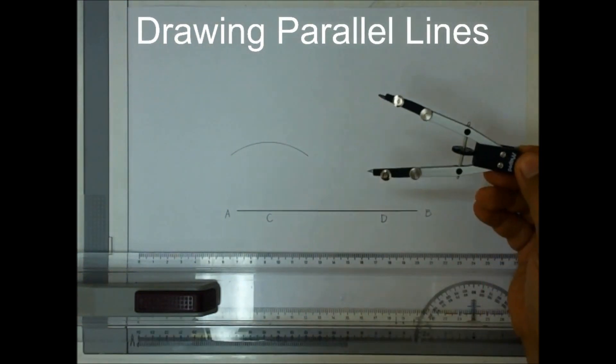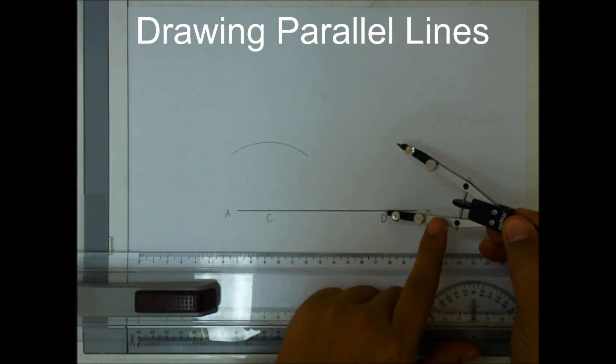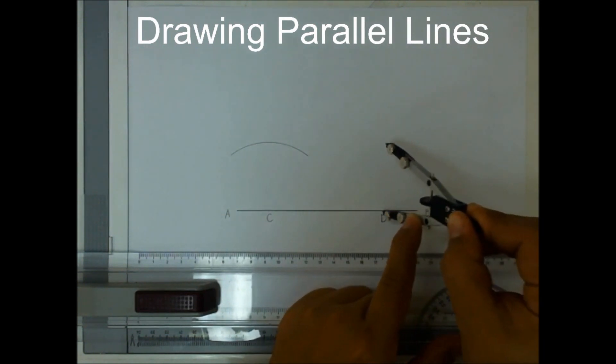Without changing the settings of your compass, draw another arc from point D.